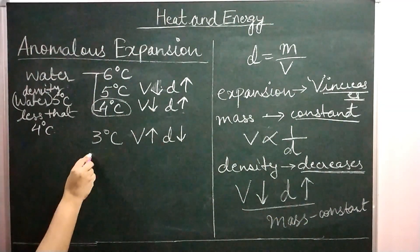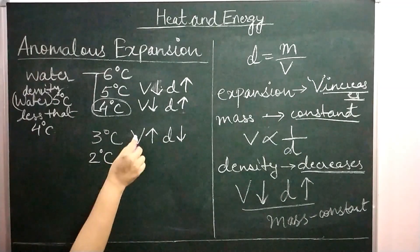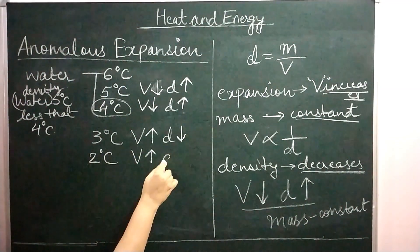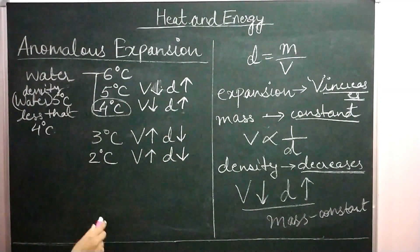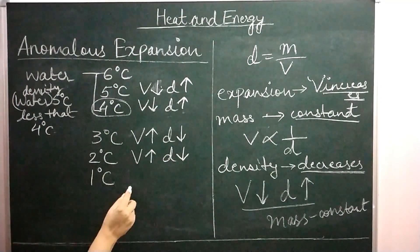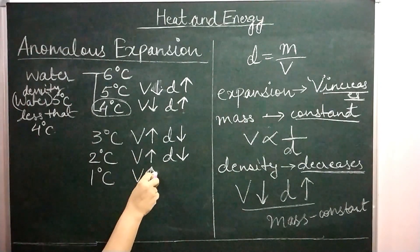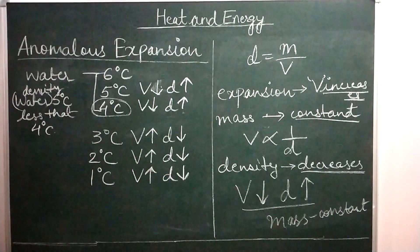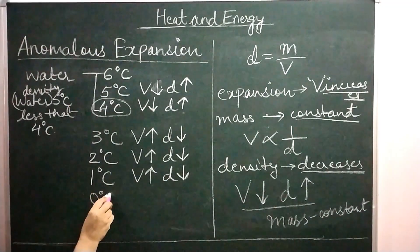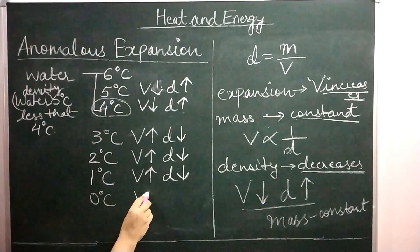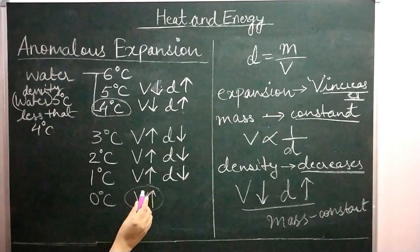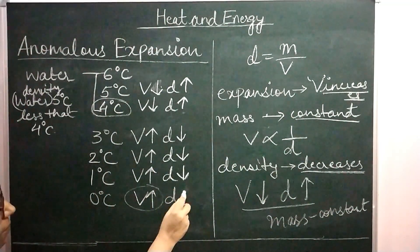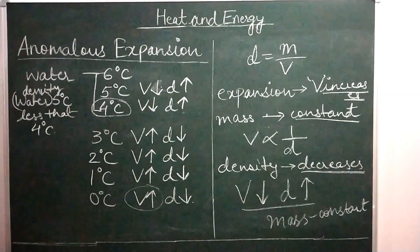On further reducing the temperature, the same thing will be observed — volume will further increase and density will be further reduced. At 1 degree Celsius, volume increases more and density reduces again. And at 0 degrees Celsius, the volume becomes maximum because it has been continuously increasing, and density becomes very less.